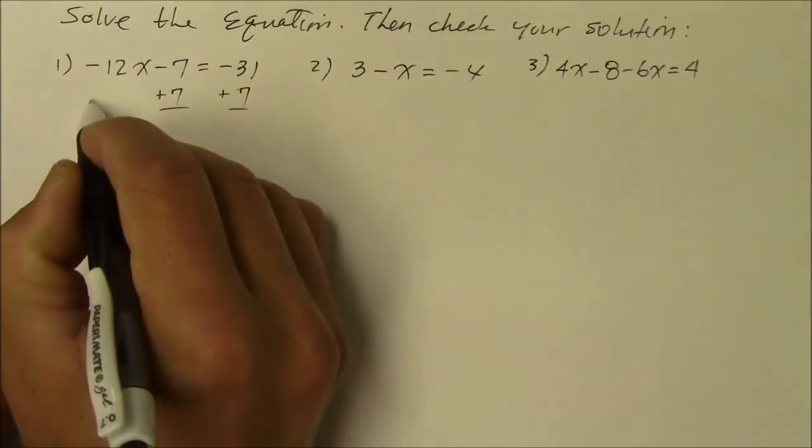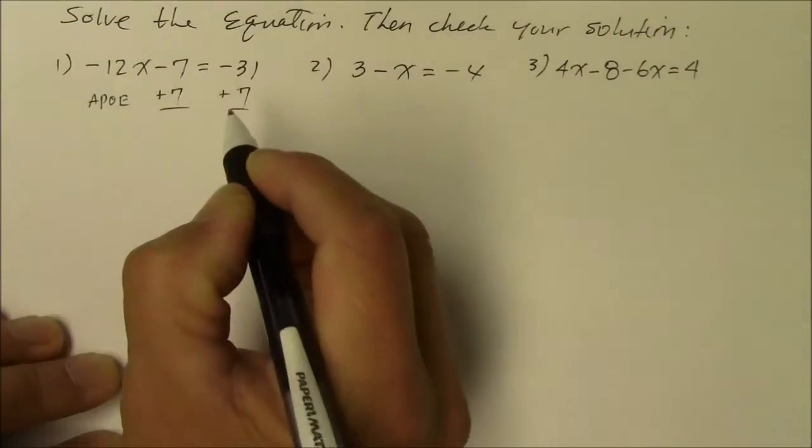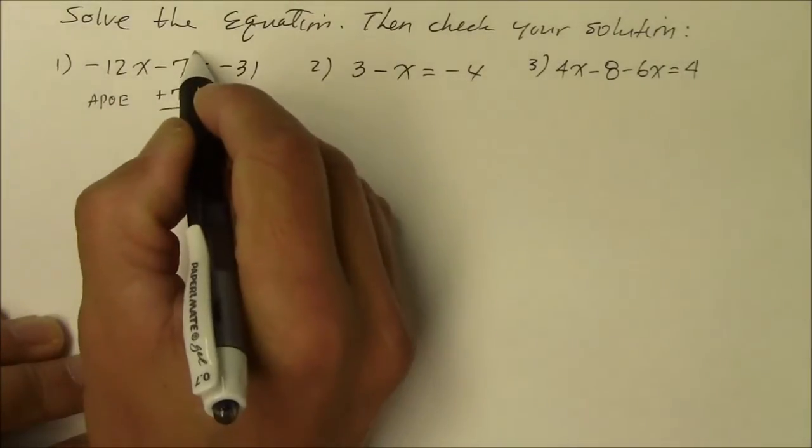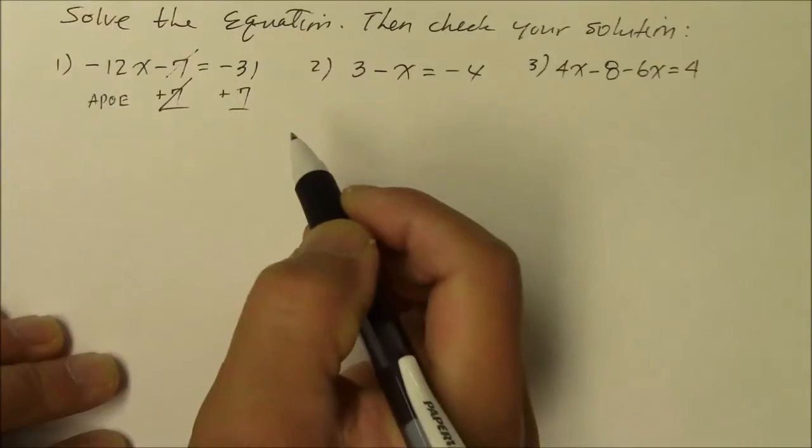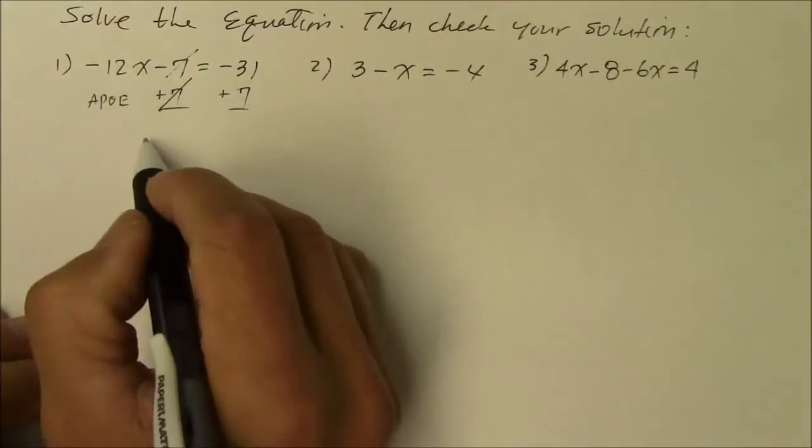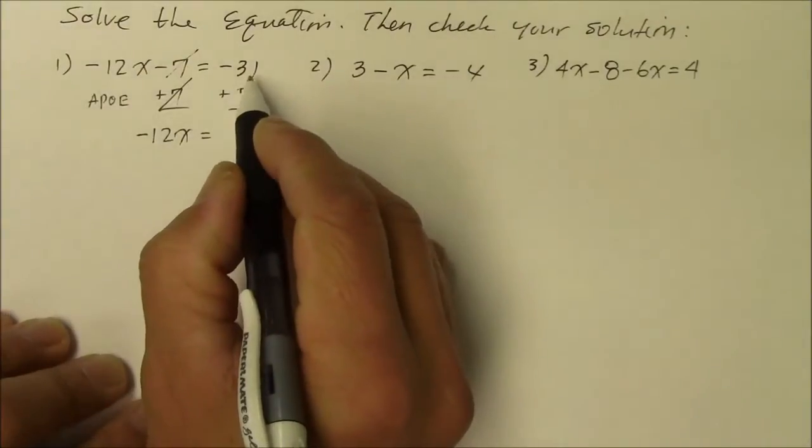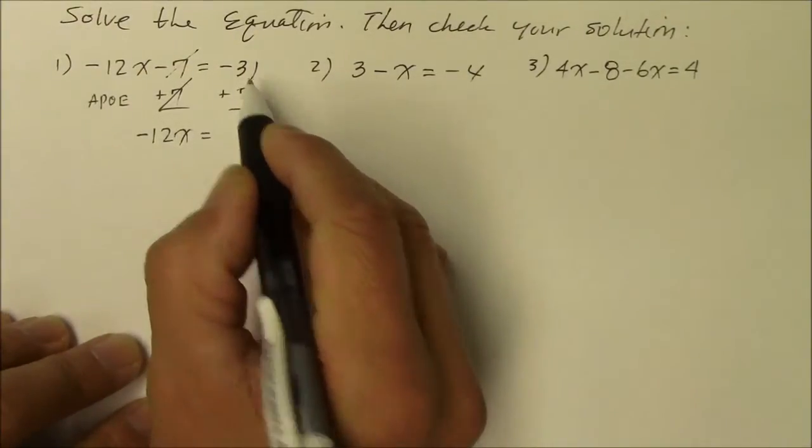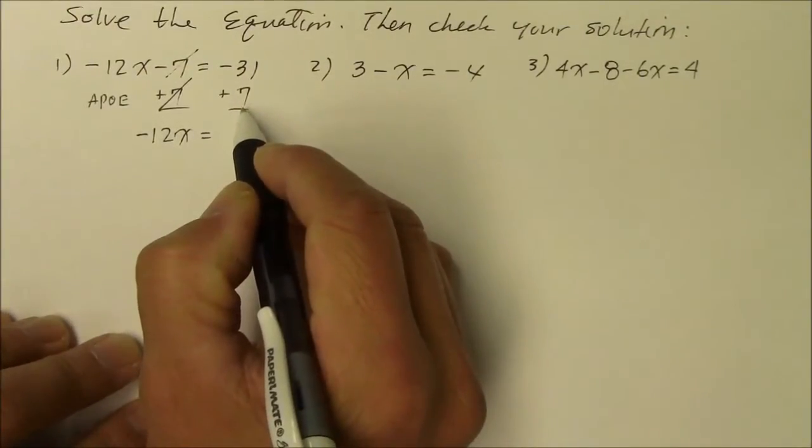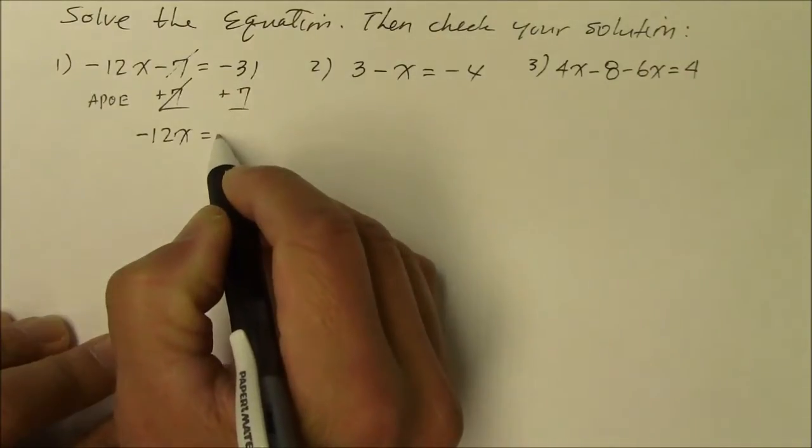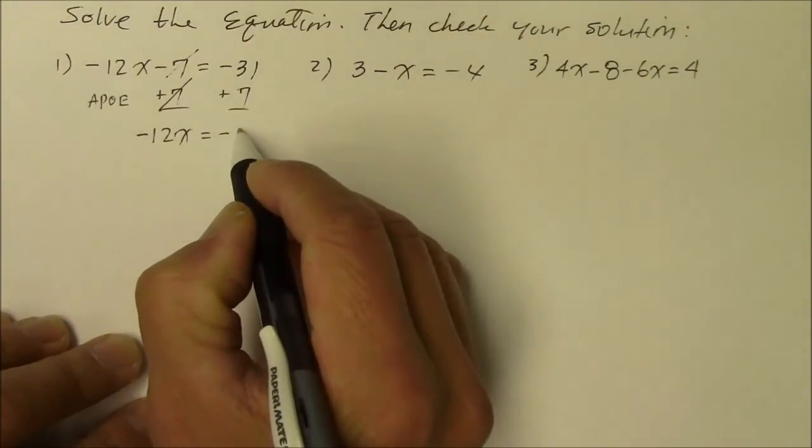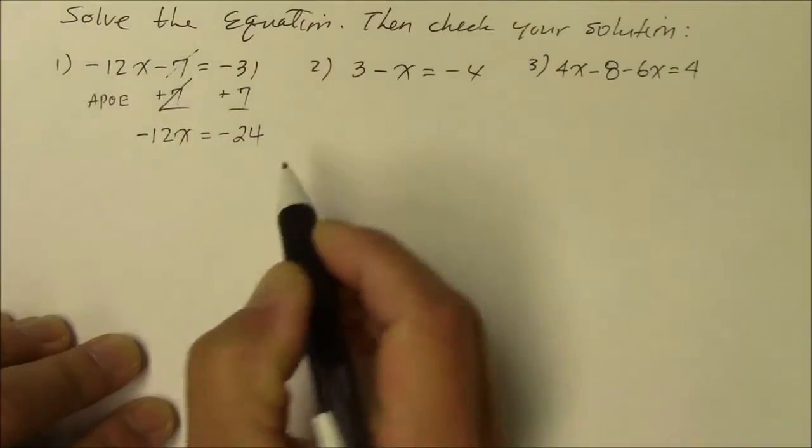So that's addition property of equality. Minus seven plus seven, they're additive inverse, so they become zero. They cancel out. So all you have is negative 12x on the left. And if you owe the bank $31 and you put in only $7, you still owe the bank some money, not as much as before, but you still owe $24, a negative balance.